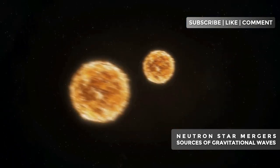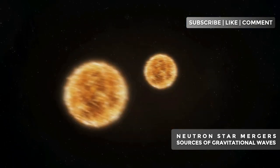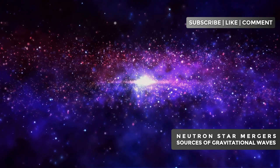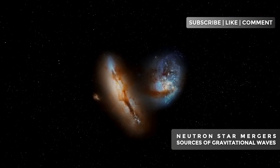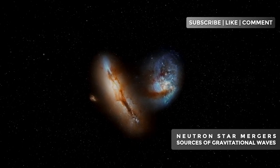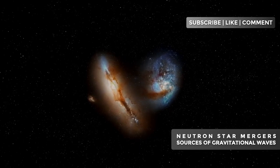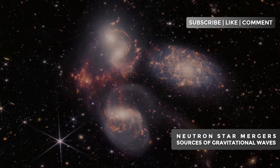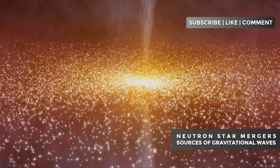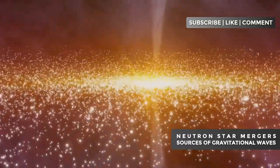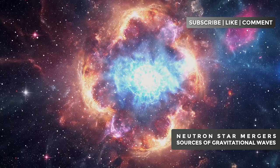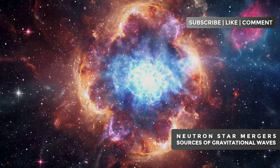Now imagine not just one, but two of these incredibly dense stars orbiting each other. It's a cosmic ballet of unimaginable proportions. These binary neutron star systems are relatively rare in the universe, but they are crucial to our understanding of extreme physics. As these stars orbit each other, they lose energy through the emission of gravitational waves. This process causes them to gradually approach each other, accelerating their orbital dance. It's a countdown to one of the most energetic events in the universe, the merger.